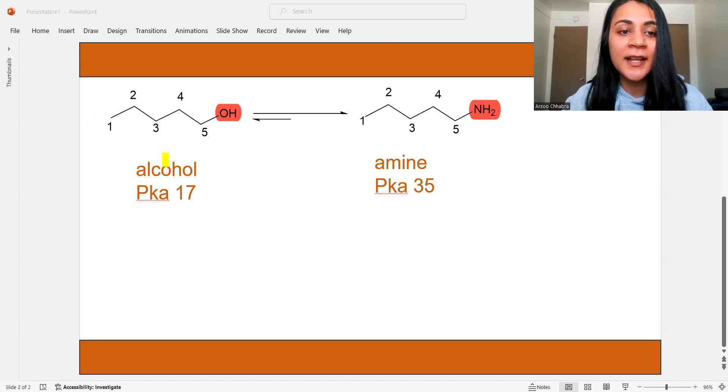So the functionality of reactant is alcohol and the functionality of this product is an amine. And then we determine the pKa of our reactants and our products. We see here that the pKa of alcohol is 17 and the pKa of an amine is 35.